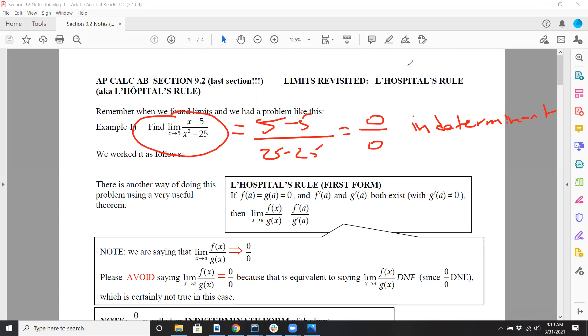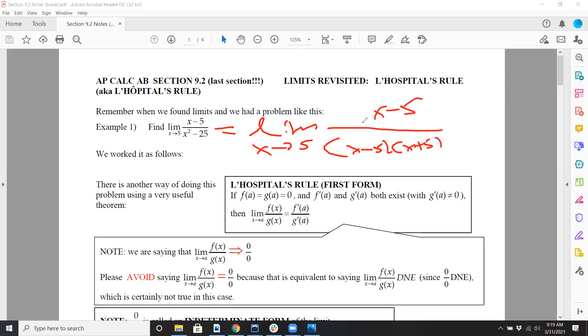So what did we do back in the day? Back in the day, we just said, okay, let's just do some factoring. Remember, don't get lazy. You got to write that limit notation. You have x minus 5 and x plus 5, and x minus 5 up top. Those cancel. Now you're doing the limit as x approaches 5 of 1 over x plus 5. Plug in 5, and you get 1/10, and you're home free.